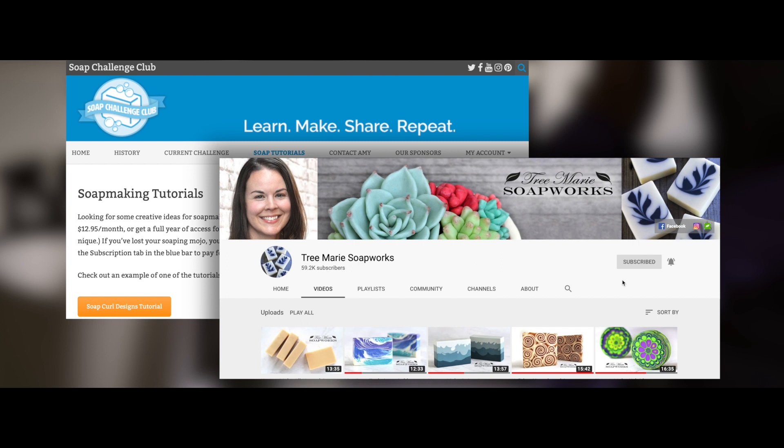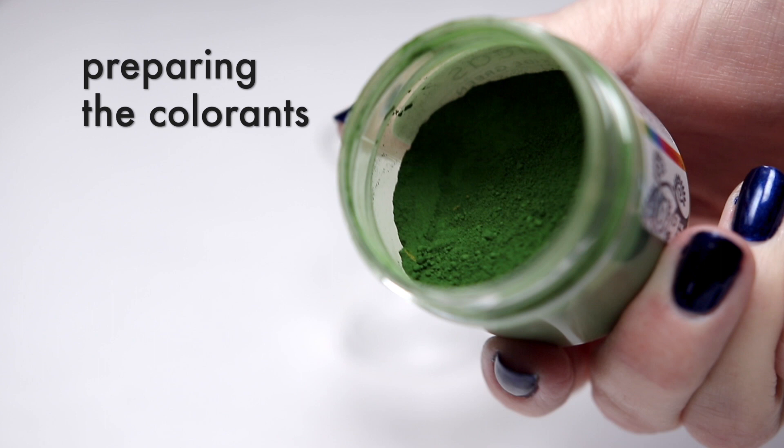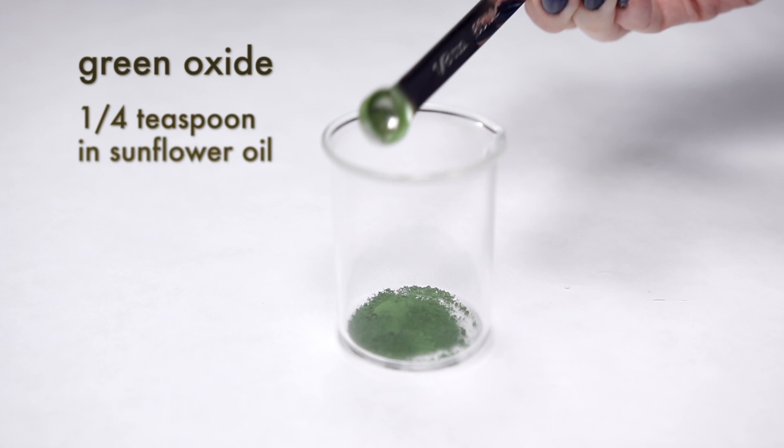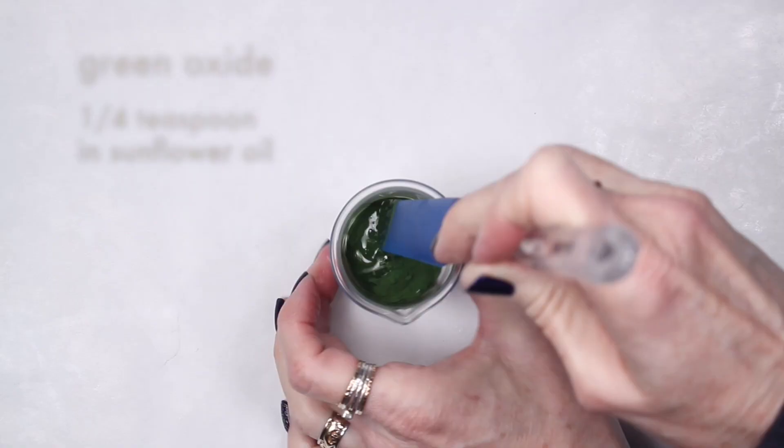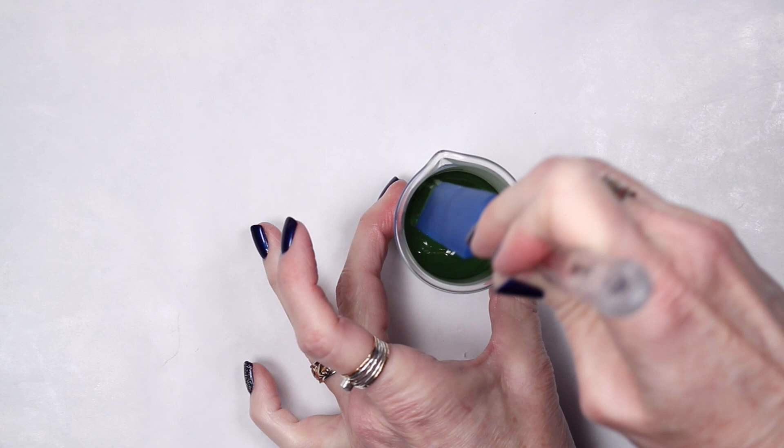My first step was to get the colorants ready. I added a little sunflower oil to one quarter teaspoon green oxide and mixed until it was completely smooth. I'll explain how I use each one of these later when I actually color the soap.